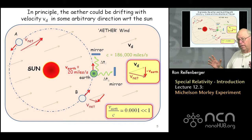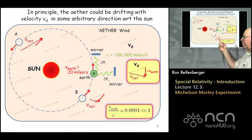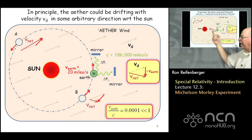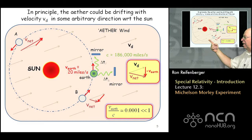If the ether is drifting with respect to the sun, we can use the same arguments as before. The only difference is we have to find a net vector velocity. For different points of the earth's orbit around the sun, the velocity vector of the earth is going to be oriented in a different direction with respect to the drift velocity of the ether, so you have to do a vector addition of the earth's velocity and the ether's velocity to get a net velocity.